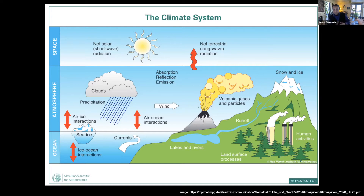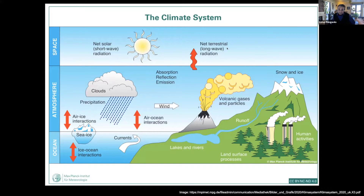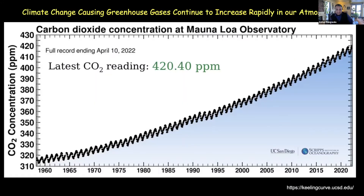Sometimes what's underneath the Earth matters too — when a volcano erupts it affects our climate. Another component we sometimes forget is space itself. We get almost all the energy to drive our climate from the sun, and it's important for part of that energy to leave back into space. If humans tinker with that process, we influence the climate.